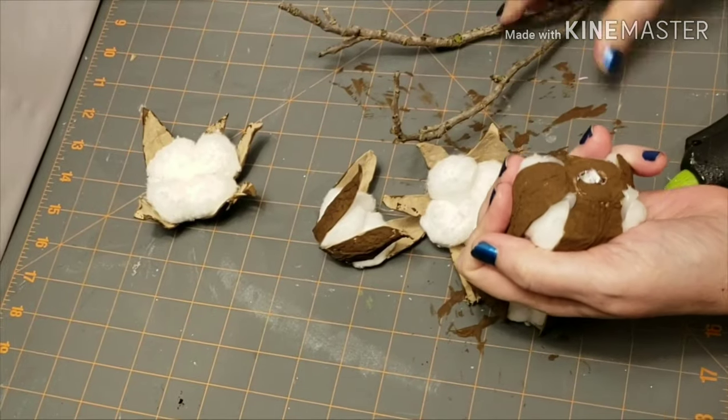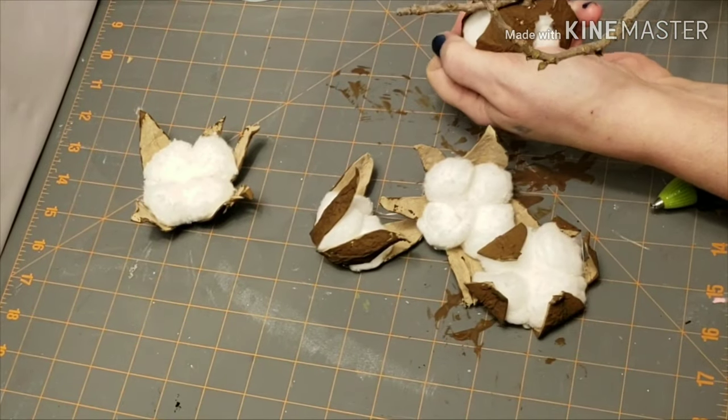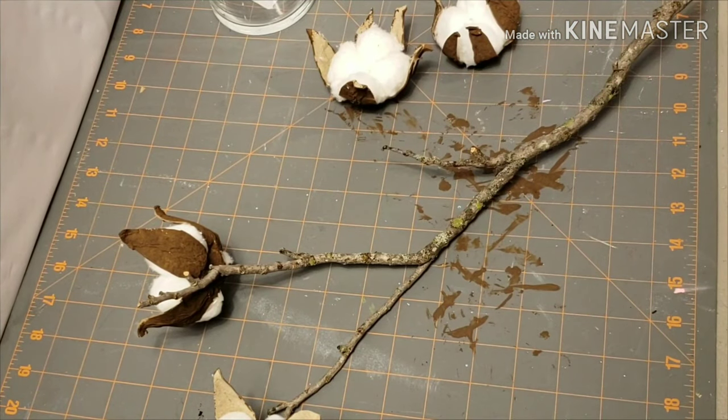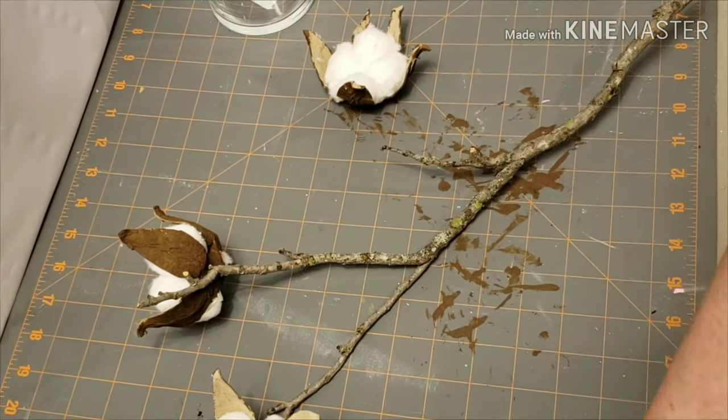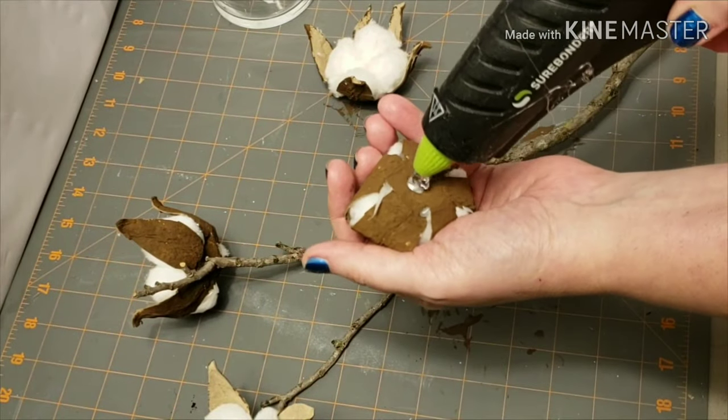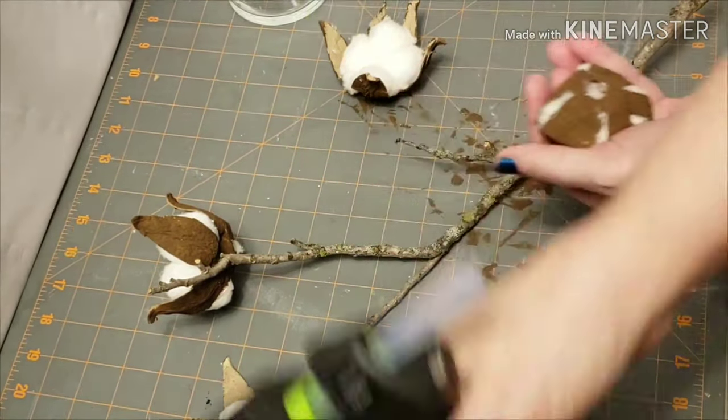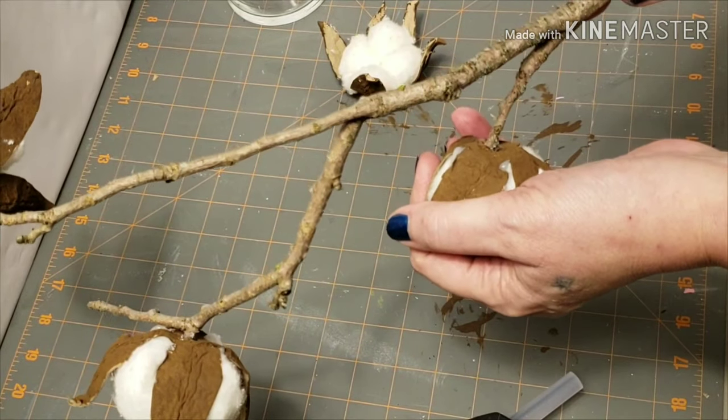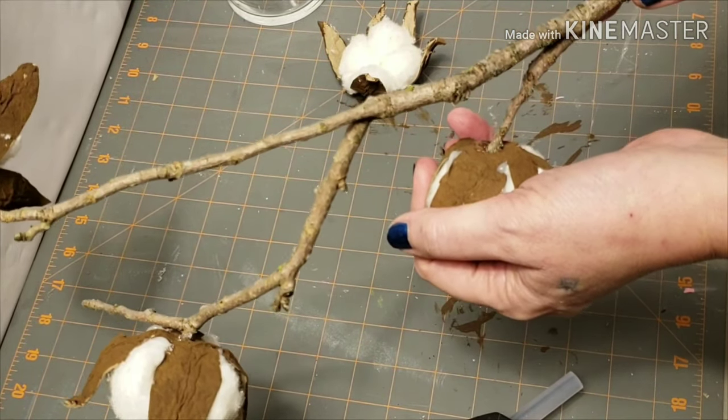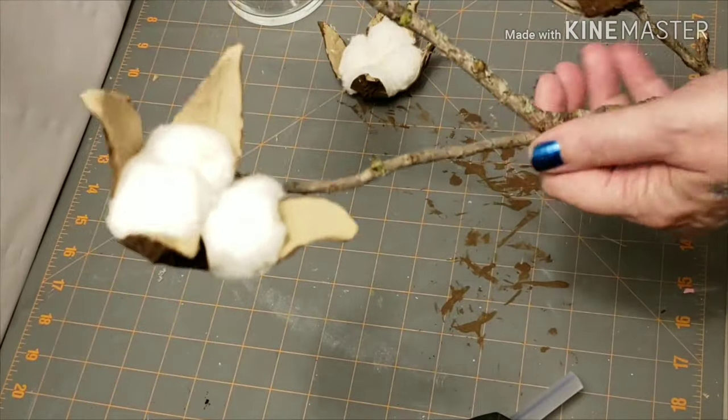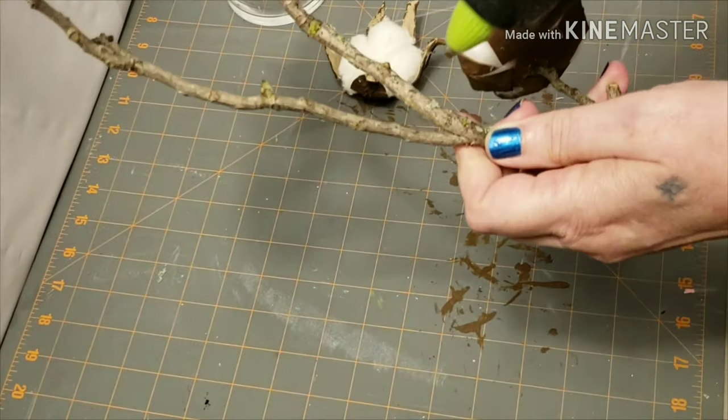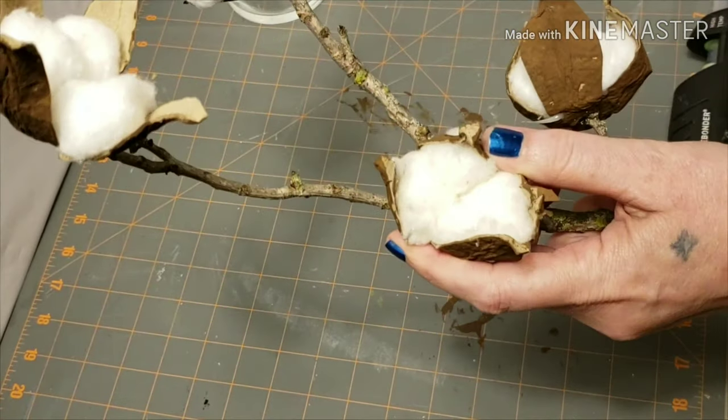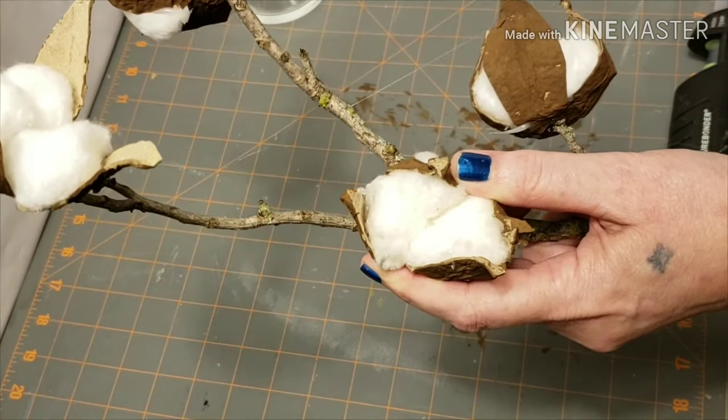Now you can put hot glue in that hole because you're going to stick it onto the ends of the branches. Here you can see better what I'm doing. Just put some hot glue on that hole that was already there and stick it on the end of the branch. You can also put some of the cotton balls on some empty spaces if you'd like, just like that.